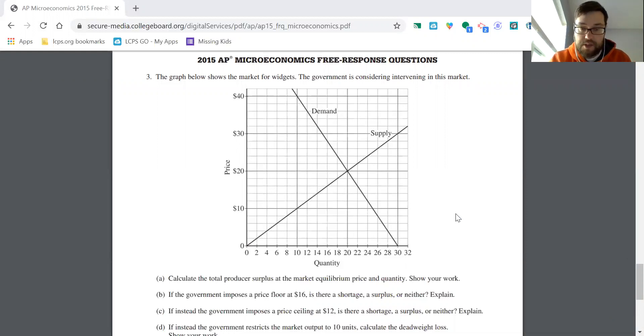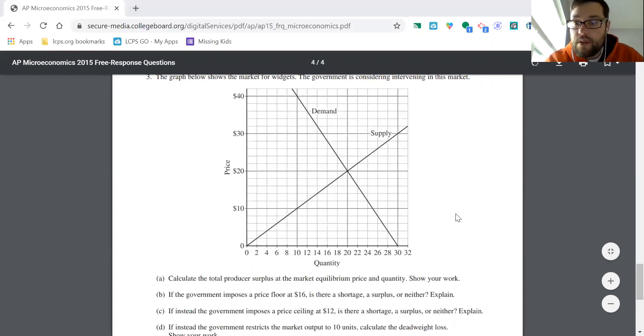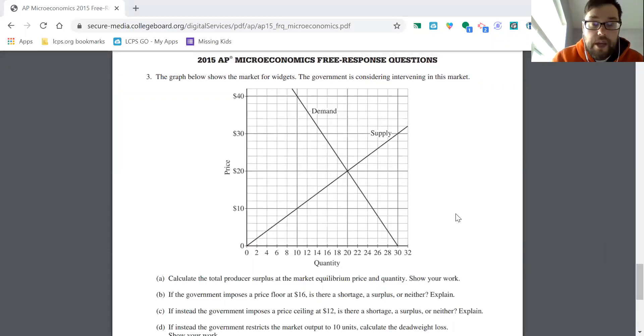Namely, price floors and price ceilings. So let's start with part A. Calculate the total producer surplus at the market equilibrium price and quantity. Pay attention, they want you to show your work. So first off, it's good just to note, I'll draw a dotted line. Our Q star is equal to 20, and then our P star, our equilibrium price is also $20.